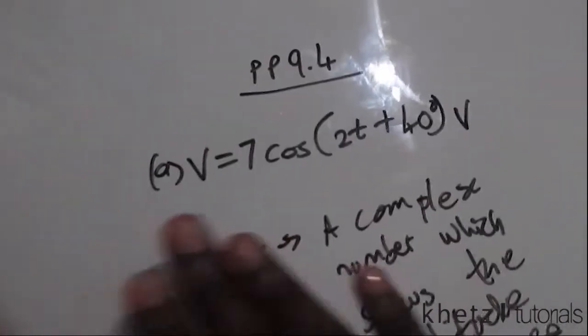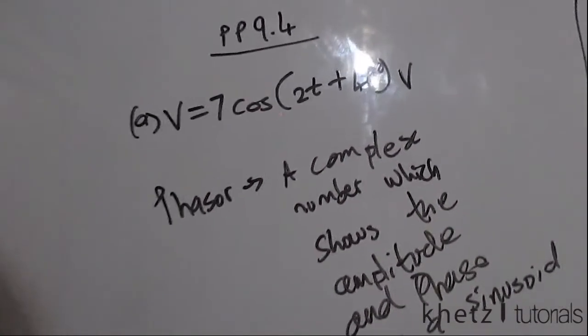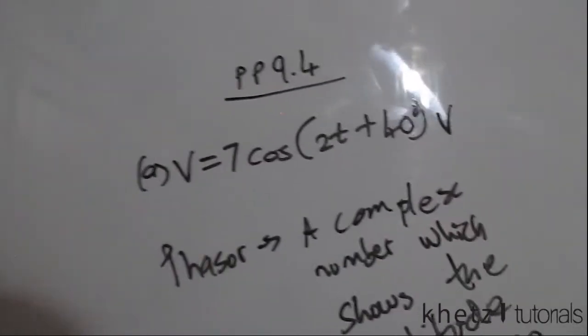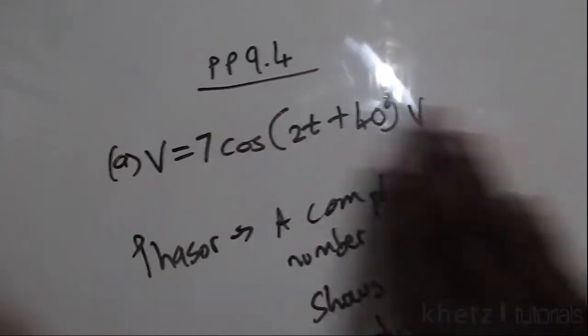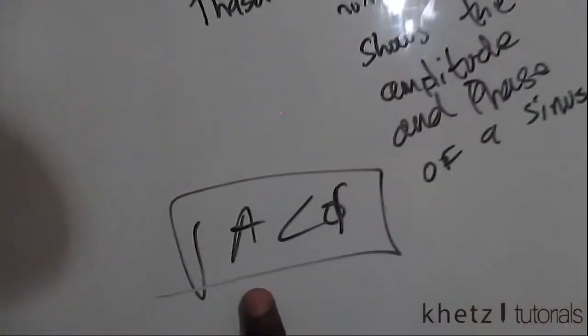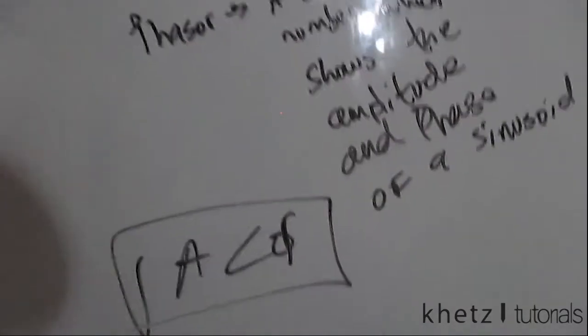Given these two sinusoids, we are asked to convert them into phasors. If it's not in cosine form, you first convert it into cosine form. Now that this first one is in cosine form, you just take the amplitude and the phase so that it matches this particular configuration.